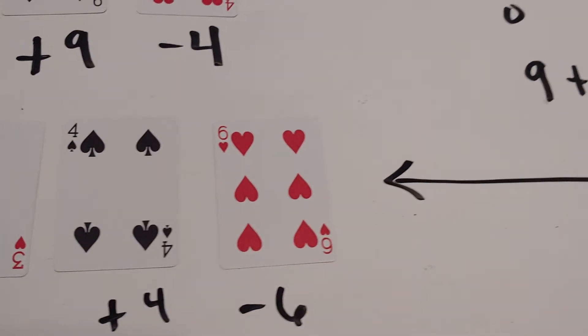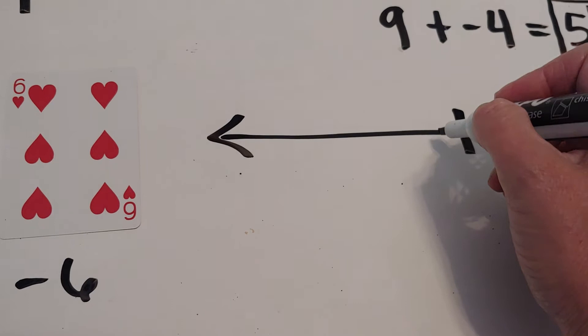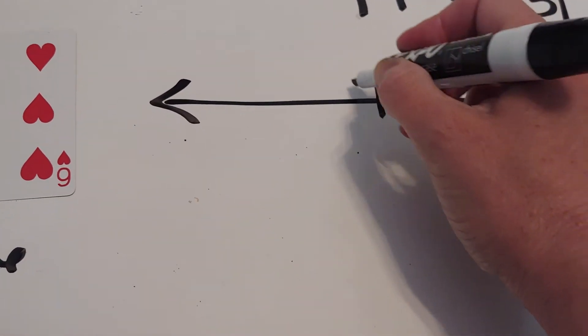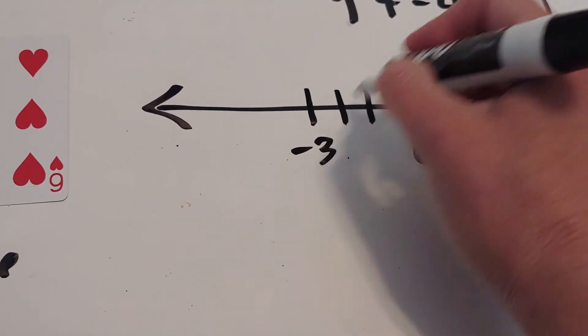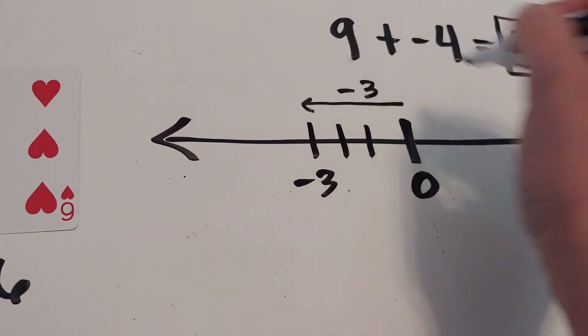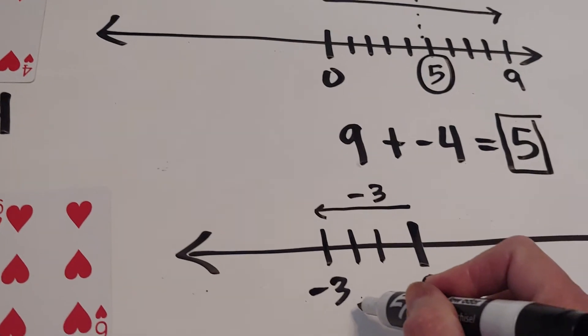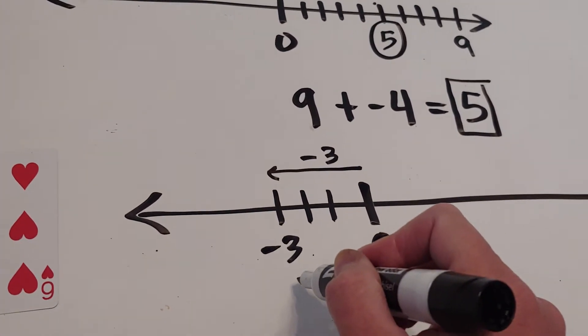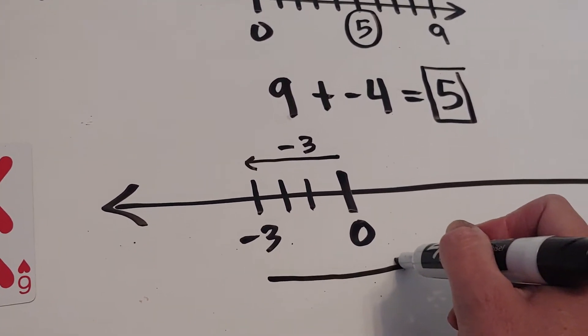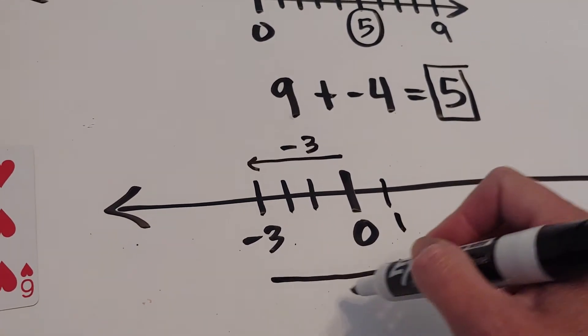On my number line, I'll start by going negative three backwards. From there, I'll go positive four. I'm going to write it down below so I have more room.